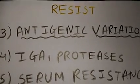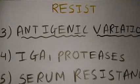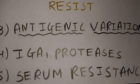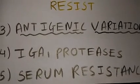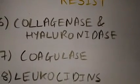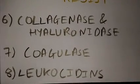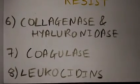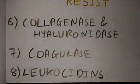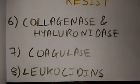In serum resistance, there is deposition of complement, which acts against bacteria. Smooth strains show more resistance than rough strains. Collagenase and hyaluronidase act against collagen and hyaluronic acid respectively, and play a very important role in subcutaneous infections such as cellulitis. The causative organism is Streptococcus pyogenes.